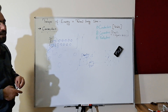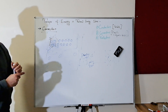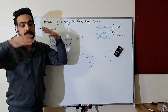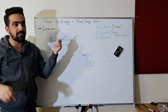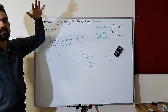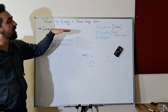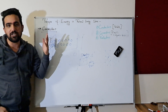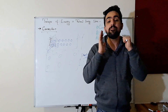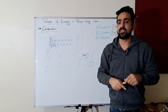We also have another mechanism for energy transfer — that is radiation — in which we don't need a solid, liquid, or gas. For example, energy from the sun in the form of thermal energy reaches us, and a large part of the space between the sun and earth is a vacuum with no solid, liquid, or gas. But energy still gets transferred, and that's why we say for radiation, we don't need any medium for the transfer of energy from the sun to earth.